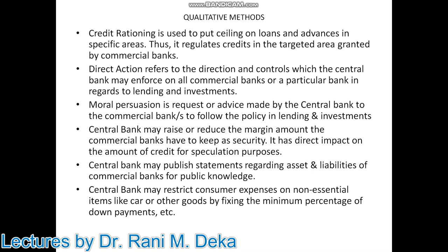Qualitative methods can be used for a particular area, particular banks, or a particular sector. Credit rationing is used to put a ceiling — that is, an upper limit — on loans and advances in specific areas such as housing loans, car loans, and loans for other consumption products. The central bank can set a ceiling on how much a bank can lend, so that no indiscipline is created in the system. It regulates credits in targeted areas granted by commercial banks.